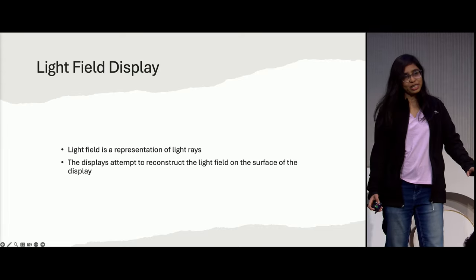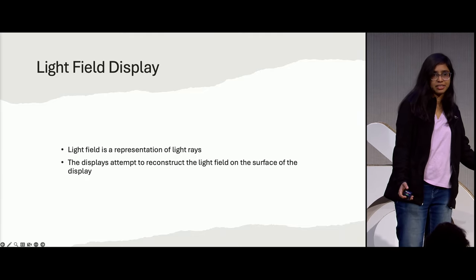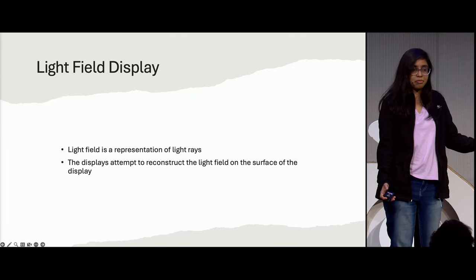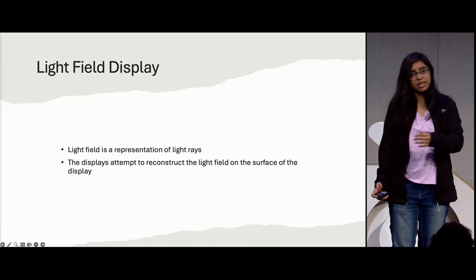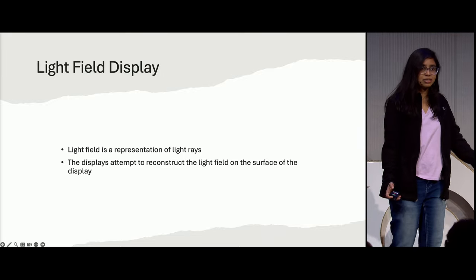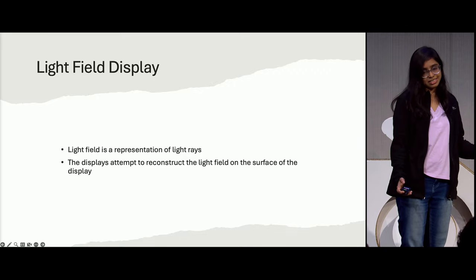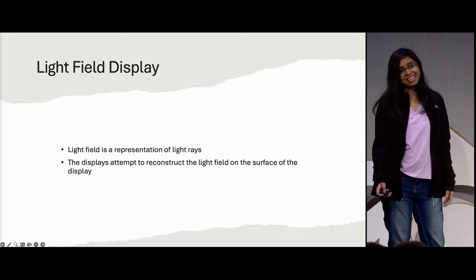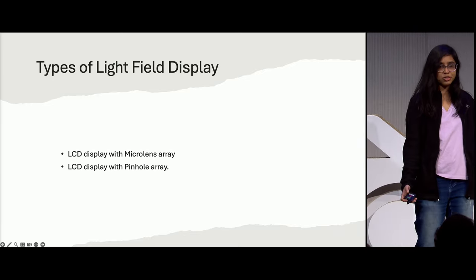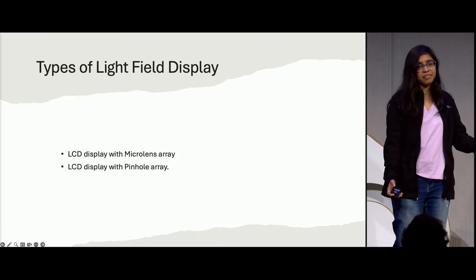Light field is a representation of light rays. With light rays, all 3D models can be represented. With the use of light field representation, we are able to model all 3D objects in the world. The basic aim of a light field display is to reconstruct the entire light field on the surface of the display. There are two different types: LCD display with a microlens array, and LCD display with a pinhole array.